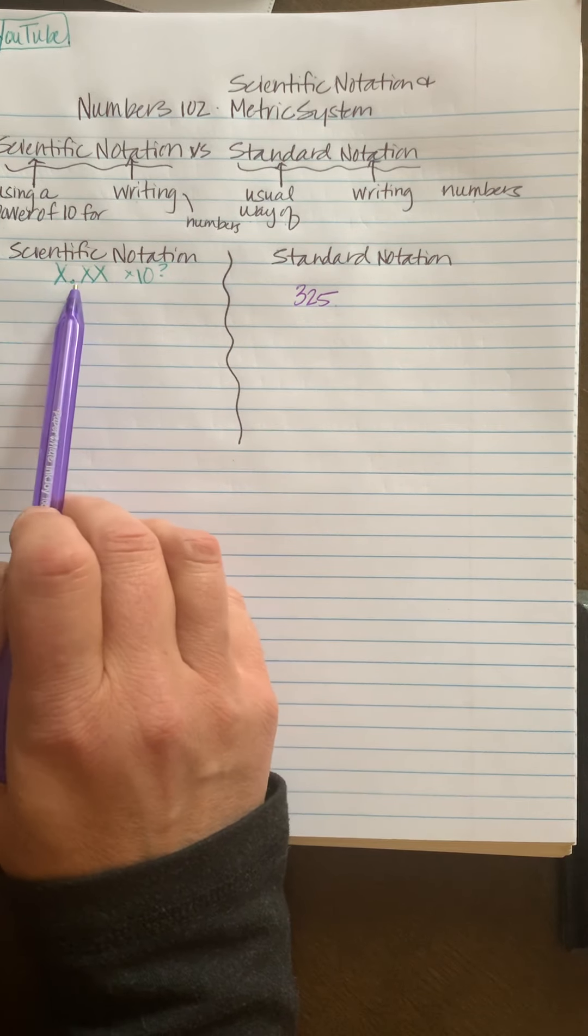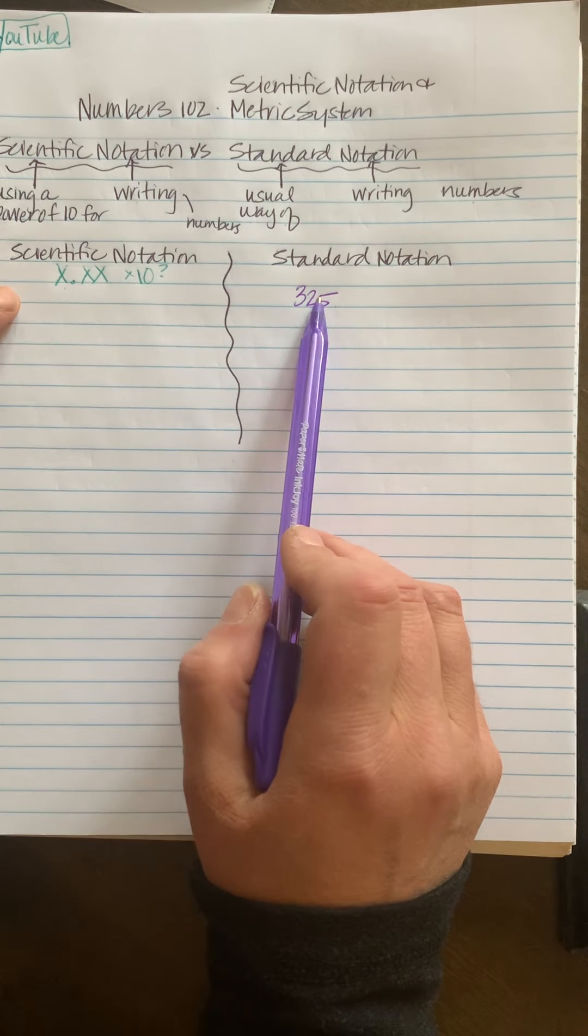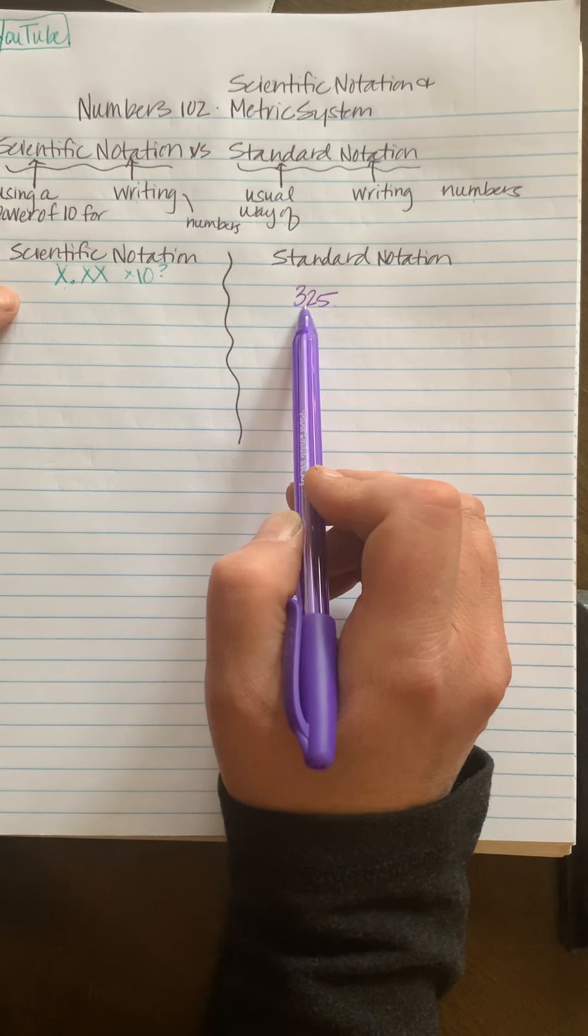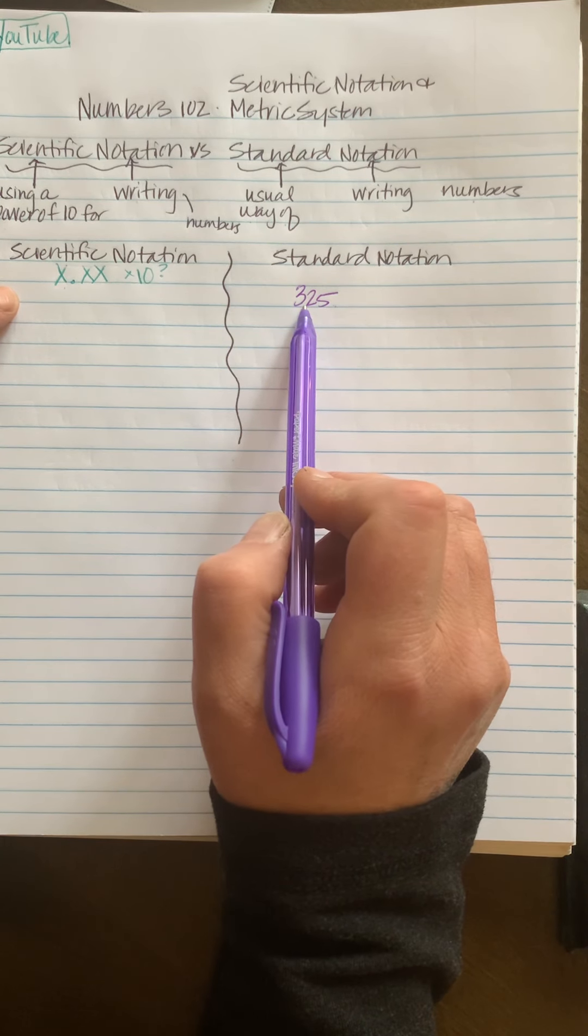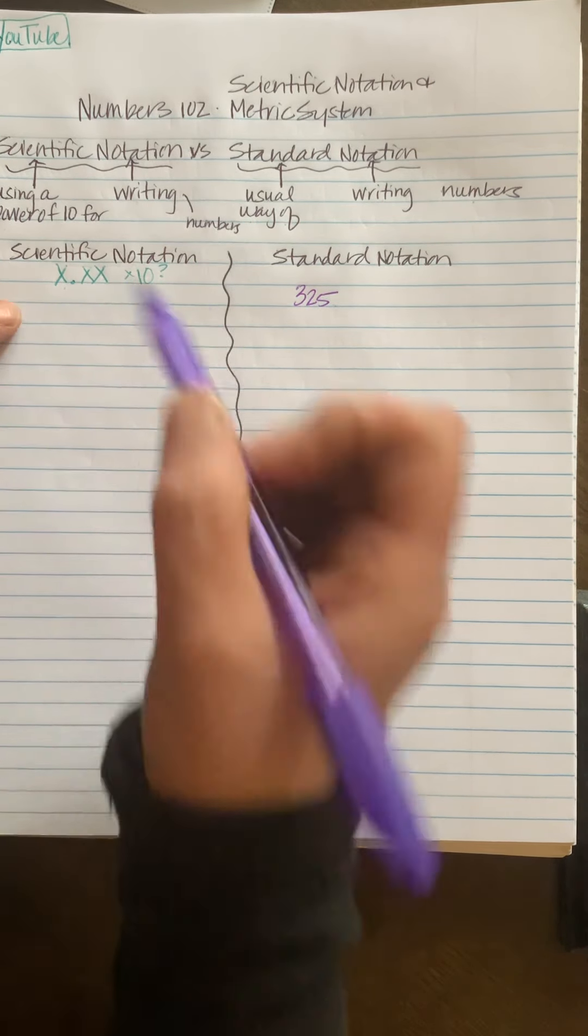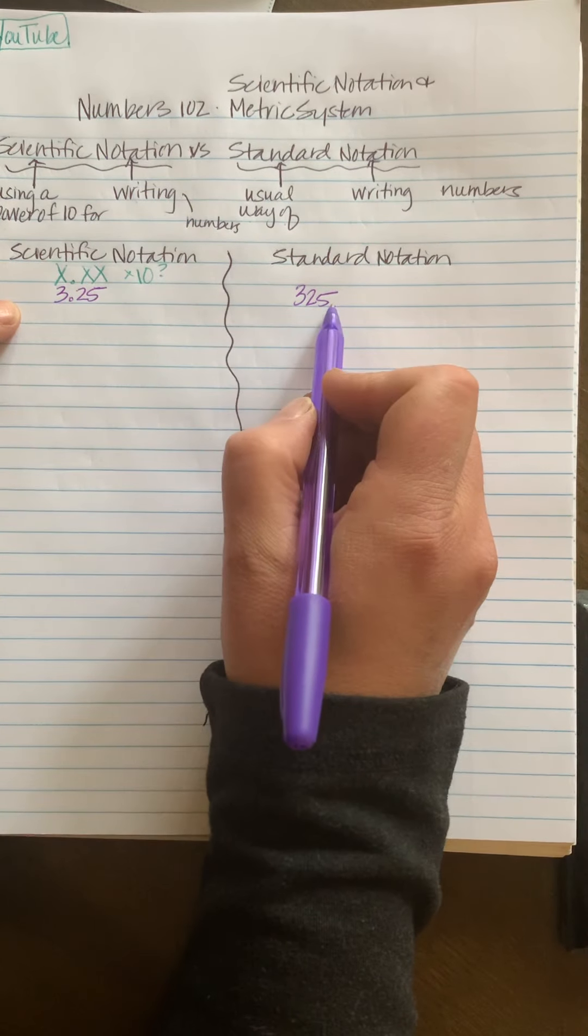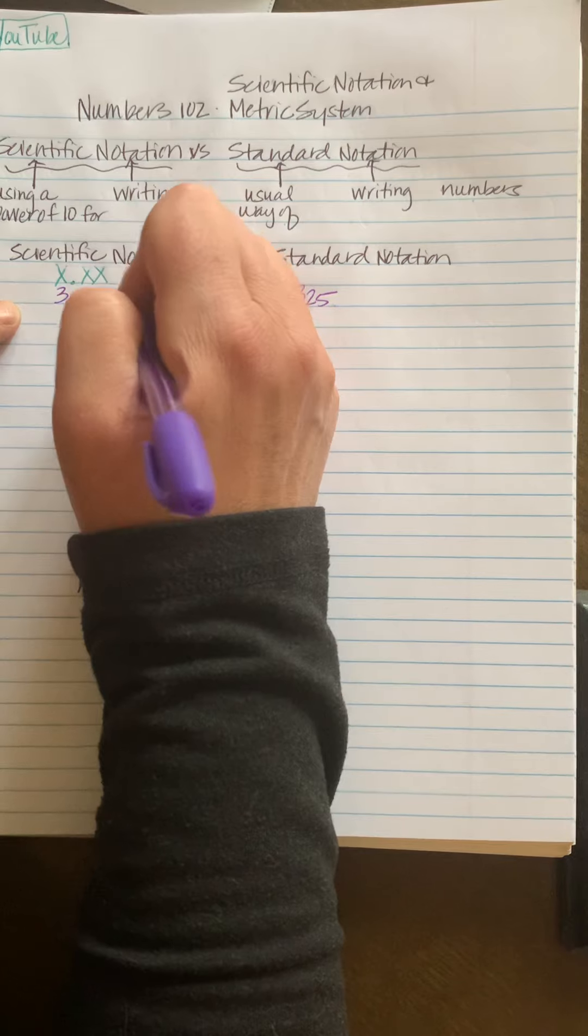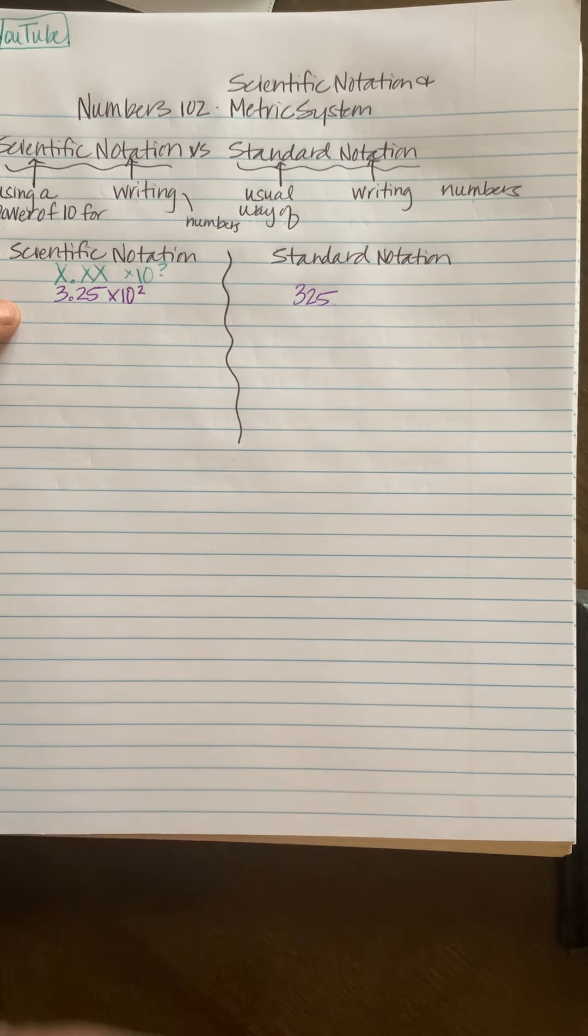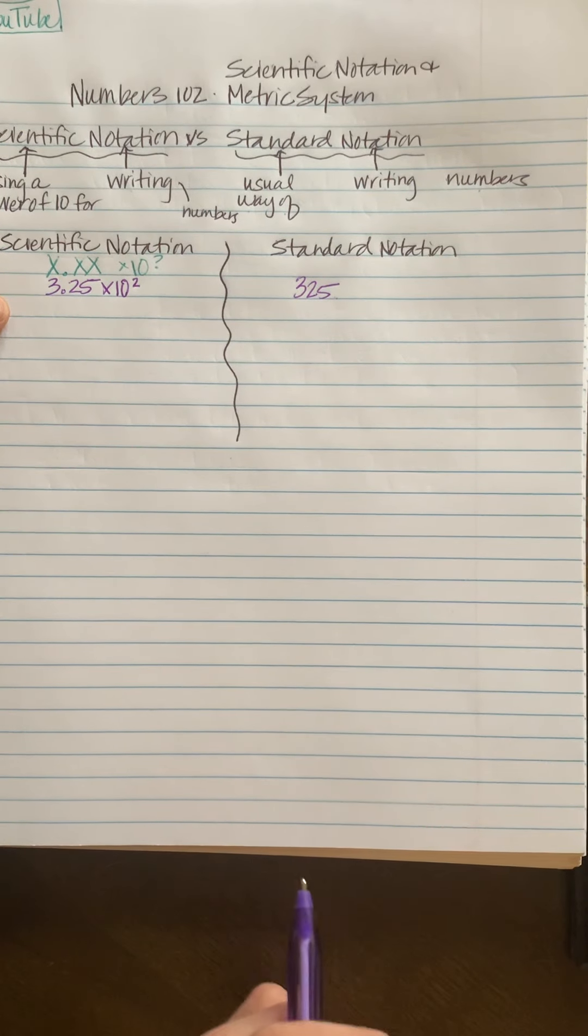Scientific notation always shows the decimal after the first non-zero number. So the number 325, we have a decimal here and we need to move it two spots to the left to get it to 3.25, which would be in this form. So it'd be 3.25, and then we moved the decimal two spots, so times 10 to the second power is how you would show that 325 is 3.25 times 10 to the second.